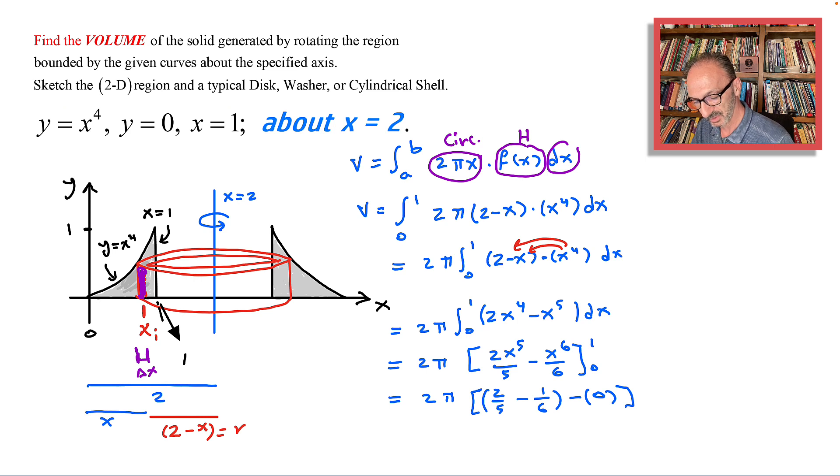The common denominator will be 5 times 6, which is 30. 2 pi, and we have 30 as a common denominator. Top side will be 2 times 6, which is 12, minus 1 times 5, and that is 7. And the final answer is 7 over 15 pi, and that should do it.